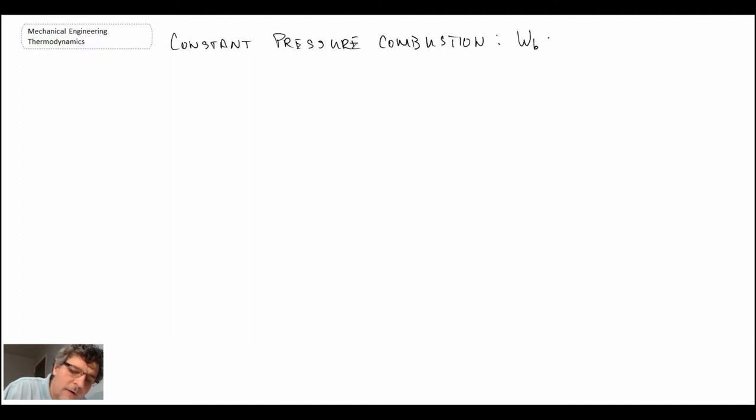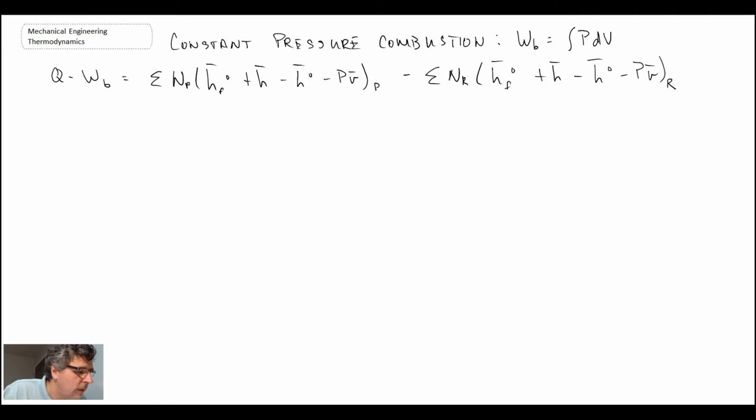And if we have constant pressure combustion, fixed mass, PDV will exist. And so if we write out the form of the first law for the fixed mass system, we have that form there.